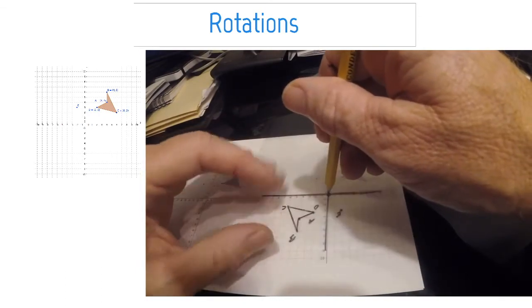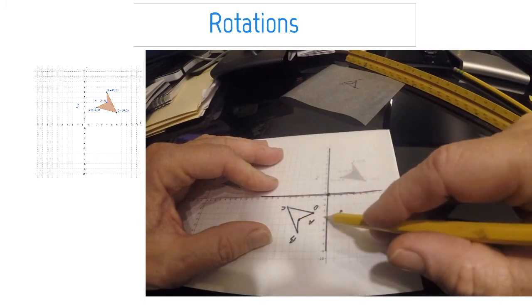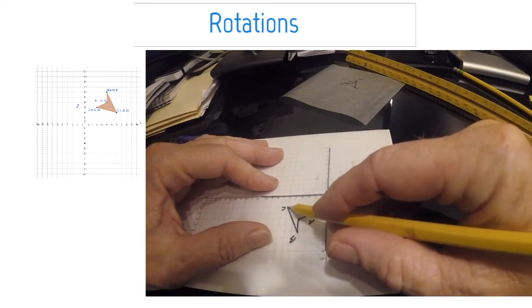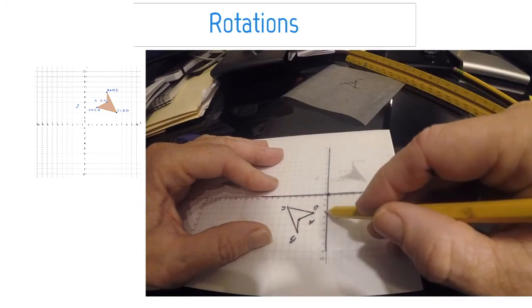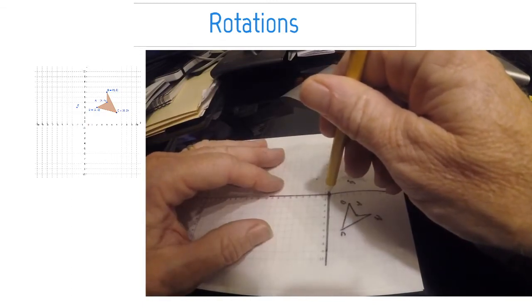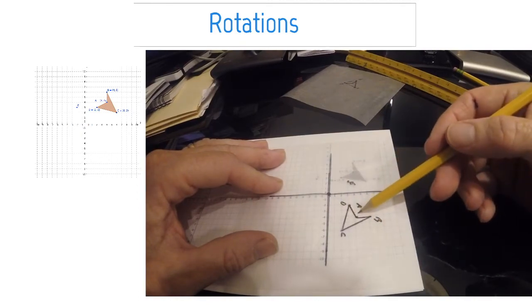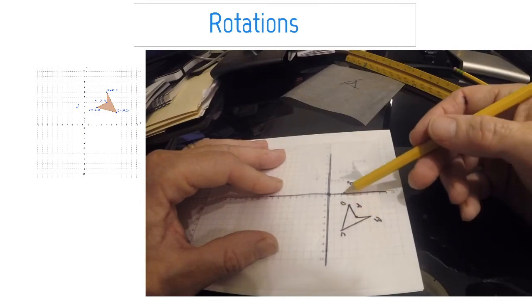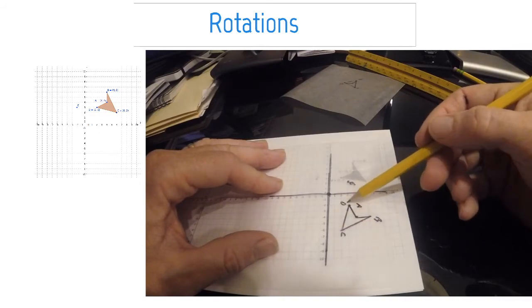Then I'm going to rotate it just another 90 degrees, which is 180 degrees total. There's my A prime with its x and y coordinate, B prime with its x and y coordinate, C prime, and D prime. Then I can put my pencil right there on the origin (0, 0) and rotate it another 90 degrees — so that's 270 degrees total from the pre-image. That gives me A prime, C prime, and D prime positions.